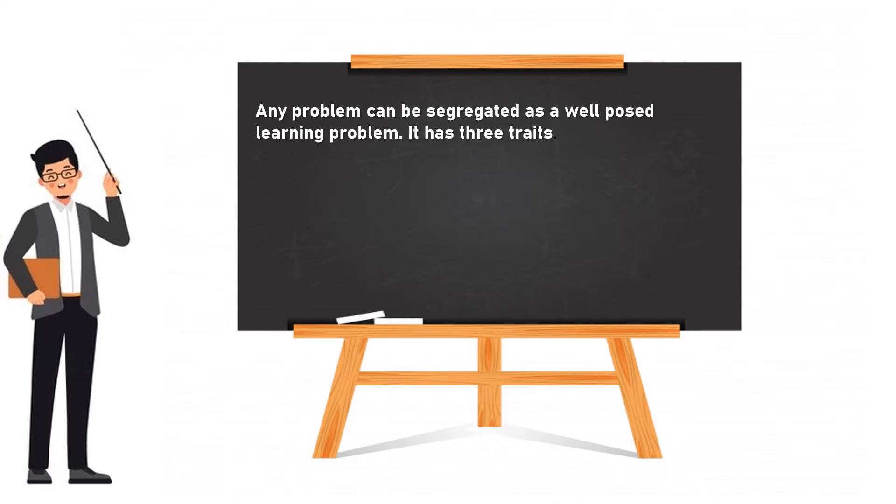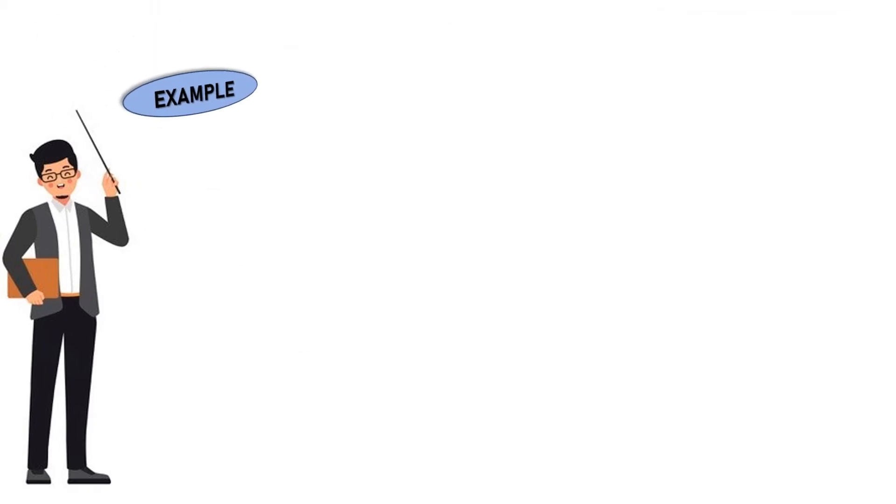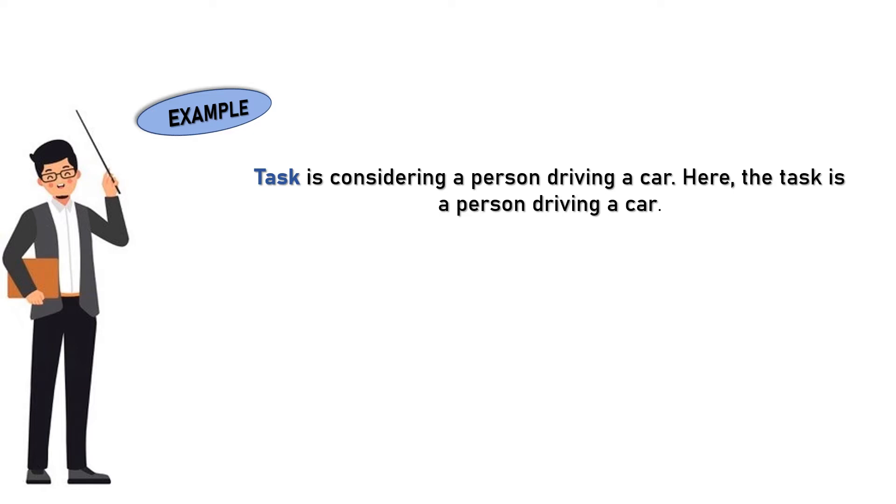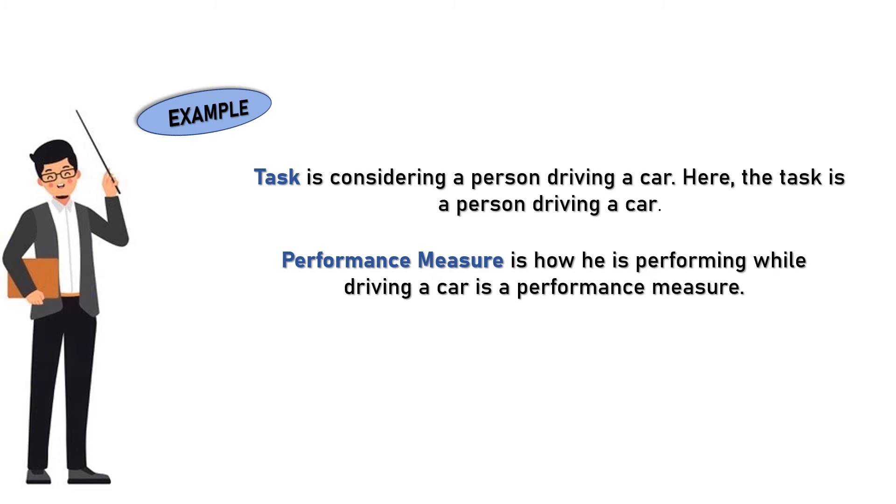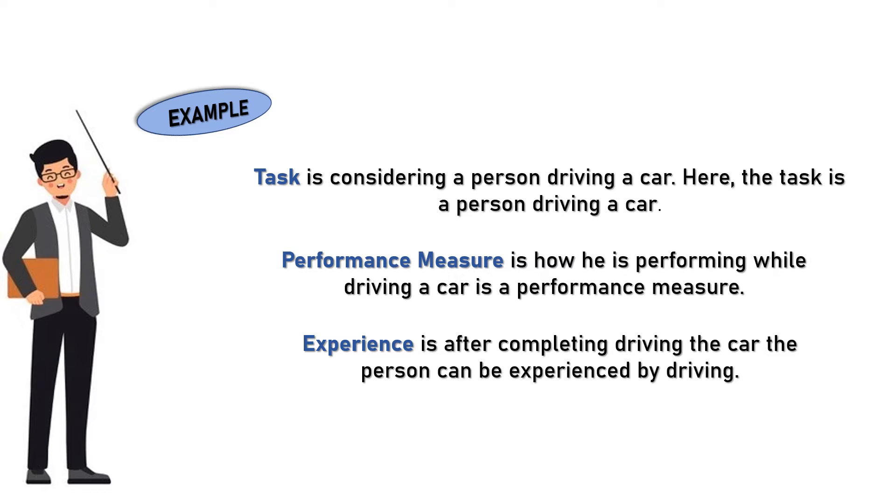Any problem can be segregated as a well-posed learning problem. It has three traits: a task, a performance measure, and experience. Example: task is considering a person driving a car. Performance measure is how he is performing while driving a car. Experience is after completing driving the car, the person can be experienced by driving.